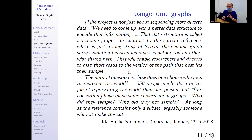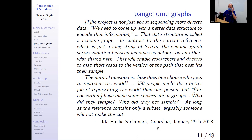Getting back to pan genome graphs and reference bias: the problem is that it's not enough to have lots of data, because you can't represent all the variations in one reference sequence. Even The Guardian — a mainstream newspaper — was talking about data structures, specifically pan genome graphs. In contrast to the current reference, which is just a long string of letters, a genome graph shows variations between genomes as detours on an otherwise shared path.